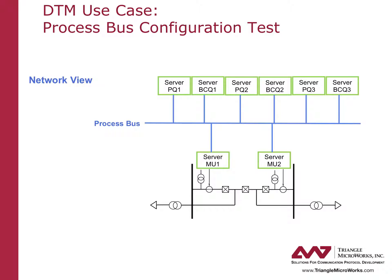One use case for DTM is testing the configuration of the process bus for a substation. As shown in this diagram, the process bus is used for GOOSE and sampled values messages across a variety of devices, including protection relays, merging units, and bay controllers. From this network view, it appears very easy to set up the connections between all of these devices with a networking bus. However, there are many different publishers and subscribers that must be configured correctly to ensure the right data is being received by the right device.